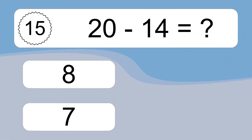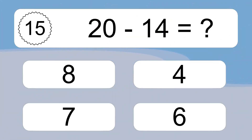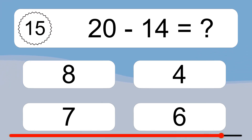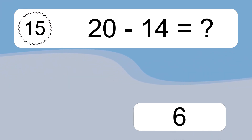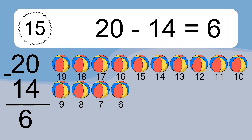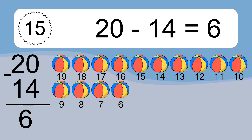20 minus 14 equals what? 20 minus 14 equals 6. Let's count it: 19, 18, 17, 16, 15, 14, 13, 12, 11, 10, 9, 8, 7, 6.